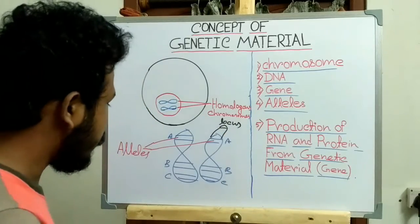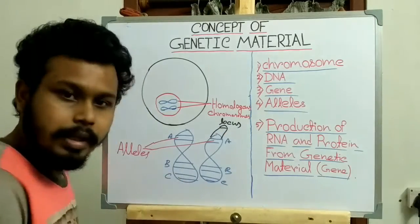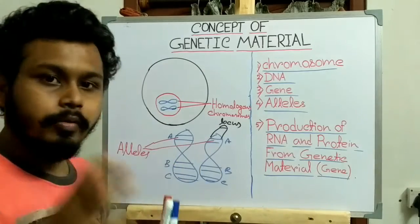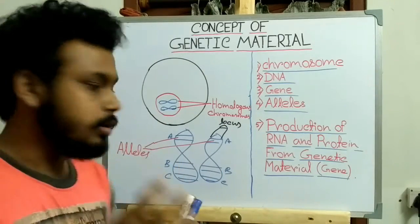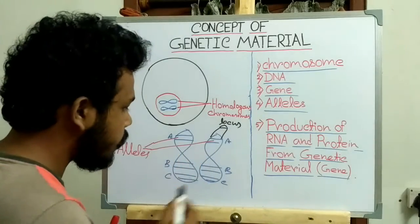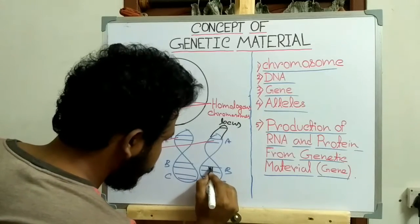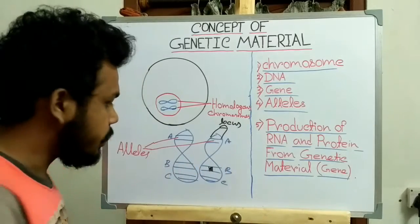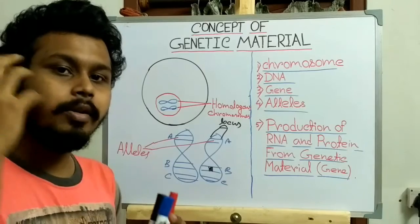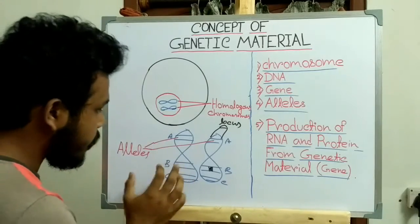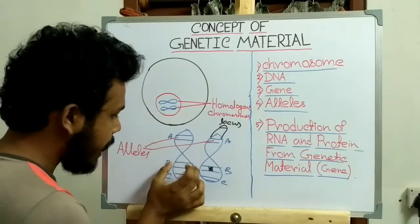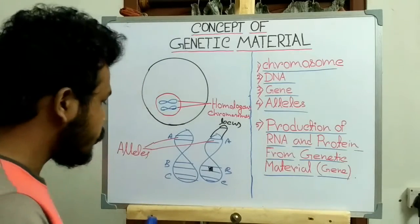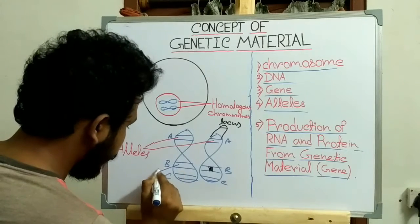Each allele can be the same or different. Alleles can differ when a mutation occurs at the position of an allele. Suppose a mutation has occurred here — as a result, this allele cannot be expressed as a functional protein. But this is the normal wild-type allele, so it can be expressed as a functional protein, and this allele is called the dominant allele.